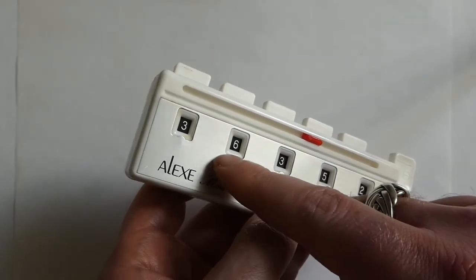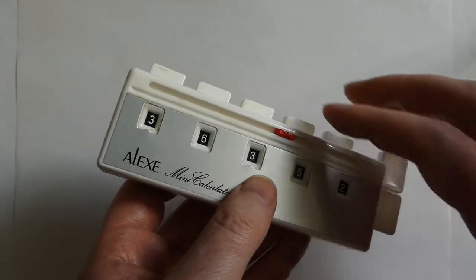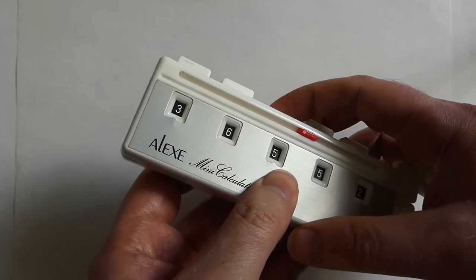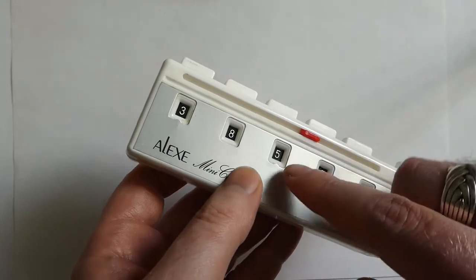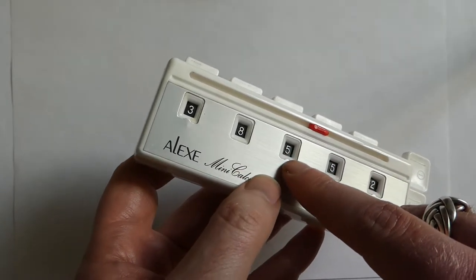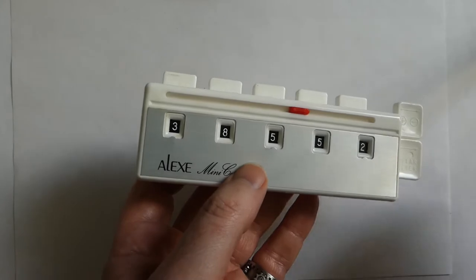It's very interesting that the number wheels alternate direction. So this one goes anti-clockwise, this one goes clockwise. That way one wheel can transfer the carry to the next without any intermediate gears.